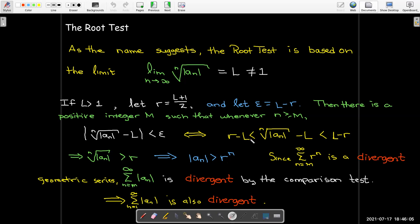And in this case, since l is greater than one, r is also greater than one, so now I have a divergent geometric series. And so this part, the tail of the series, is larger than a divergent series, so it is going to be divergent as well.